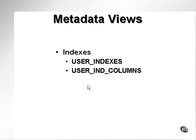First of all, two metadata views which are useful for indexes are user_indexes and user_ind_columns. User_indexes simply gives you the details of the indexes — the index name, the table it's allocated to, and various other bits and pieces, including statistics. User_ind_columns, on the other hand, gives you the details in each index, namely the columns and the orders in which those columns are placed into the indexes when there is more than one column in an index.